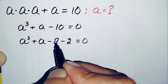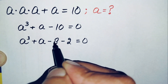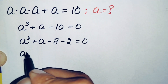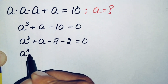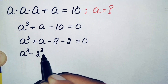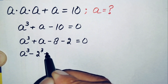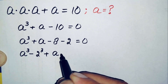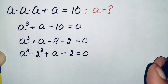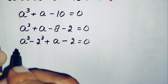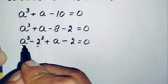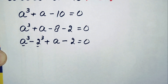Now here we can write this 8 as 2 cubed. So we will move this negative 8 to group with a cube. So this will become a cube minus 8, where 8 can be written as 2 cube, plus a minus 2 is equal to 0. So here these two terms are in cubic form, so we will use the a cube minus b cube identity here.